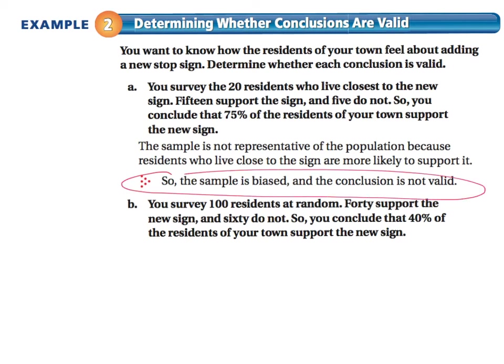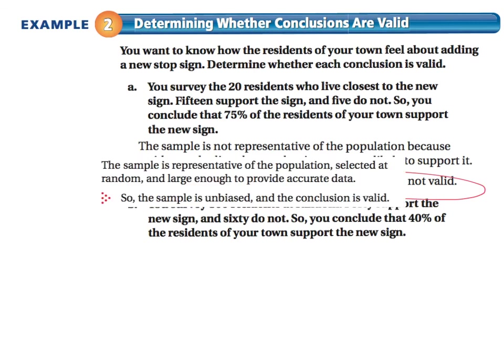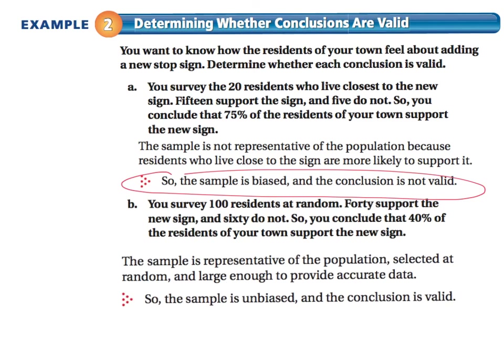In part B, you survey 100 residents at random: 40 support the new sign and 60 do not, so you conclude that 40% of residents support the new sign. The sample is a good representation because it's selected at random and large enough to provide accurate data. The sample is unbiased, so the conclusion is valid.